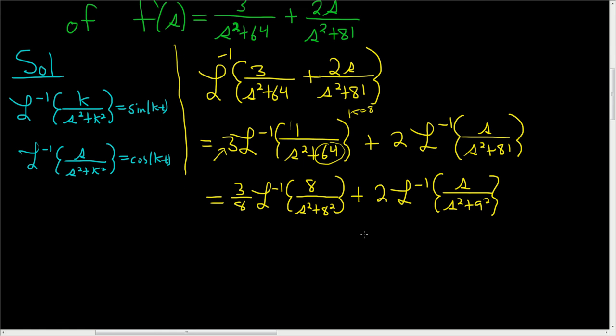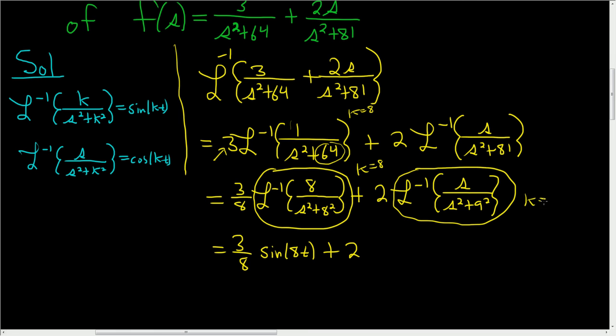And we're almost done. So this is going to be equal to 3 eighths. And then all of this, here our k is 8, and so it's going to be sine of 8t plus 2. And here we have the s and cosine has the s. And here k is 9, so it's going to be cosine of 9t. And that is the final answer.